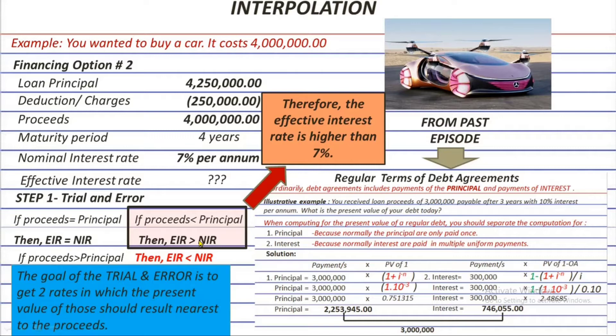In borrowing option number two, we are sure that the effective rate is higher than 7%. I told you in the past episode that we'll get the present value of the principal and the interest using 10% — this rate is just based on my judgment. Let's do that now.